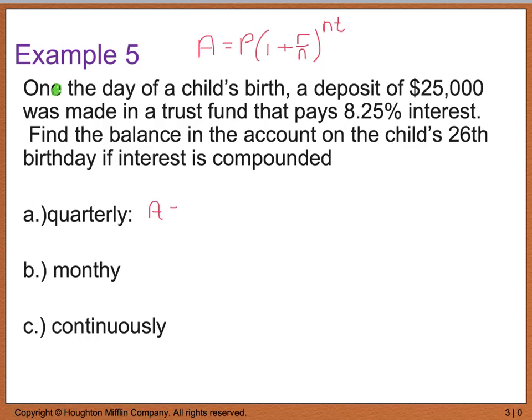So in order to find A, I'm going to take my principal which was $25,000 and multiply that by one plus R, which is eight and a quarter percent. And remember when we convert percentages to decimals, we move the decimal place two places to the left. So I have 0.0825 divided by four because quarterly means four. And I'm going to raise that to the power of four times T, which in this case is going to be 26 years for their 26th birthday. Now when I simplify that, this is going to give us $208,941.65. So that's a pretty good chunk of change in 26 years.